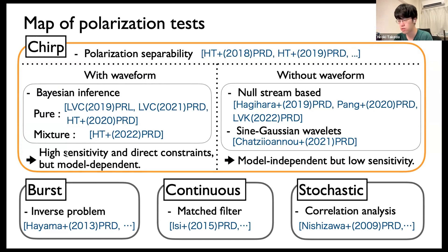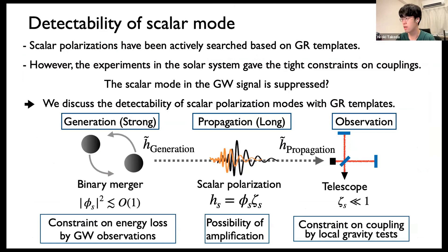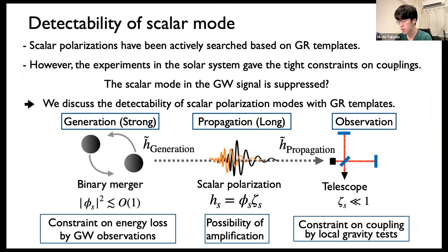Of course, this approach should be model-dependent to some extent, using GR-like templates. Scalar polarizations have been actively searched for so far. However, on the other hand, experiments in the solar system gave tight constraints on the couplings. So the question is: is the scalar mode in the gravitational wave suppressed or not? Based on this constraint of the coupling, here we discuss the detectability of scalar polarization, mostly with GR templates.